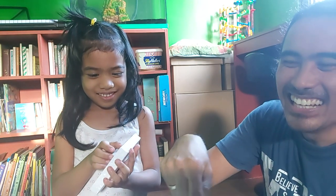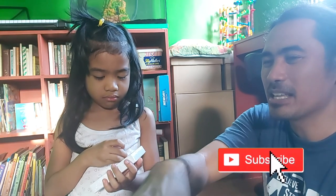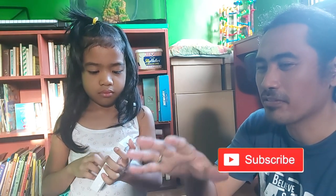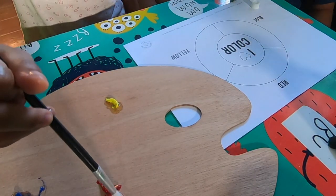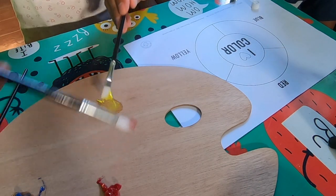So why are they called primary colors? Because with these three colors, you can make many kinds of colors from them by combining any of them. Okay, so let's start with painting red and blue and yellow, and then we'll try to mix them later.